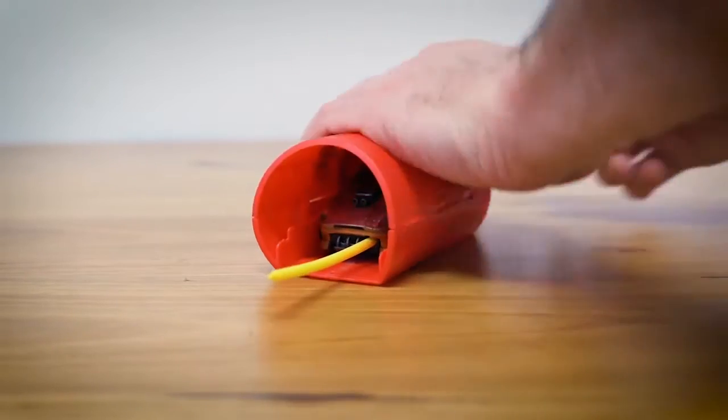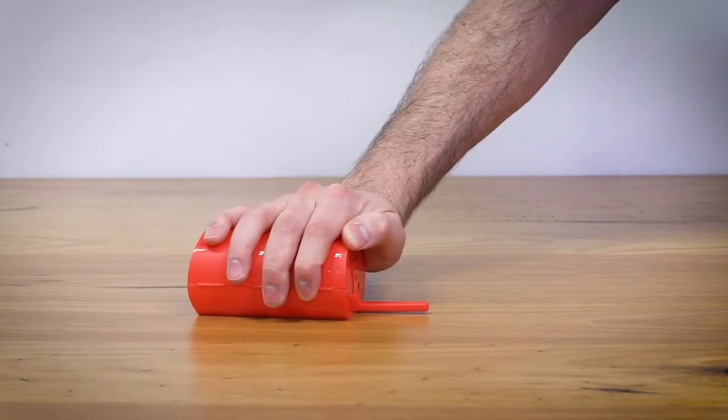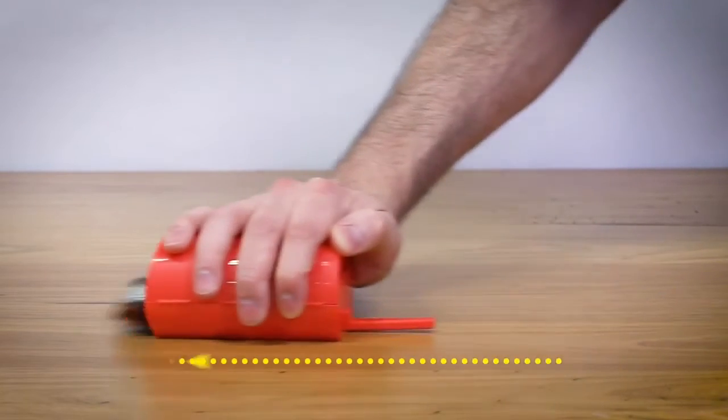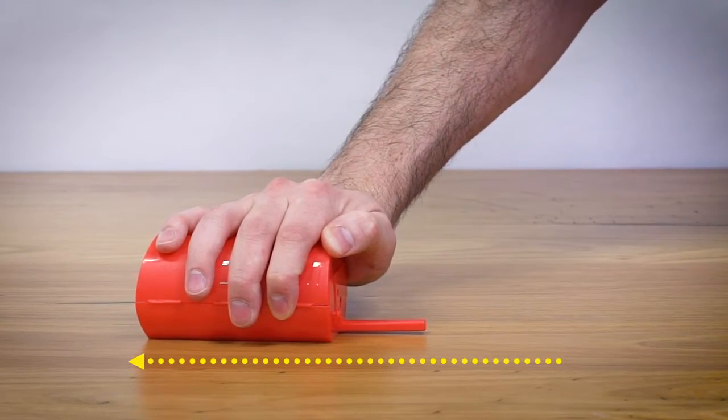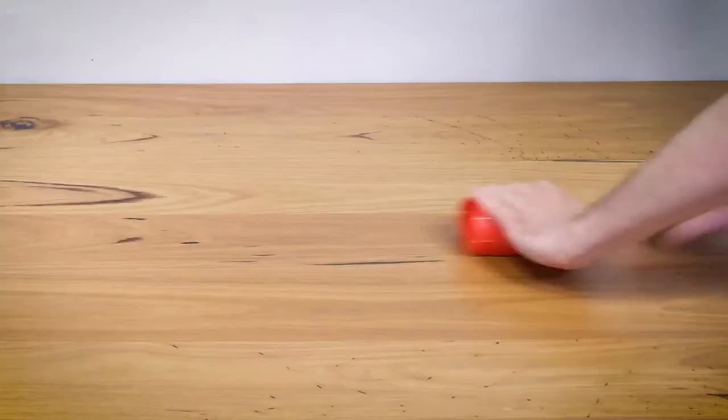When you want to get some extra pace, all you need to do is push the launcher forward ever so slightly while you pull back on the rip cord. This creates even more power. Boom!